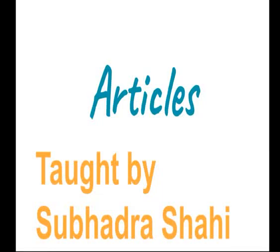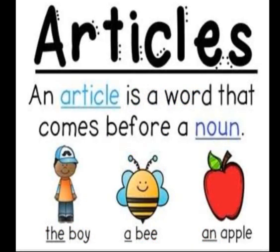Hello students, through this video we are going to learn articles. What are articles? An article is a word that comes before a noun. Jo word noun ke pehle aata hai, article noun ke pehle use hota hai. And it is used to point out people or things. For example: the boy, a bee, an apple.